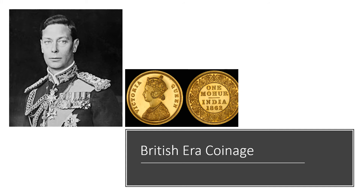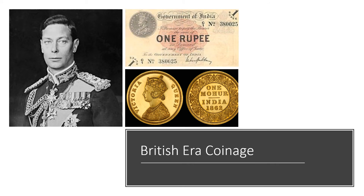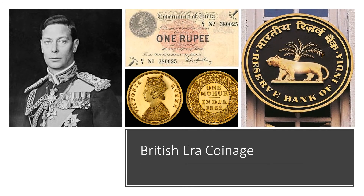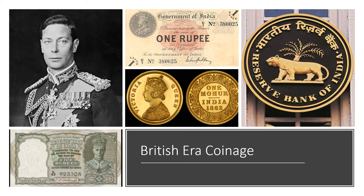During World War I, one-rupee coins made of silver were in circulation, but due to the crisis following the war, one-rupee coins could not be generated, and therefore for the very first time, one-rupee notes were introduced. Finally, after the establishment of the Reserve Bank of India in 1935, the government of India was empowered with the issuance of Indian currency notes. The very first paper currency the RBI issued in 1938 was a five-rupee note with a portrait of King George VI; later, Rupees 10,000, Rupees 2, and Rupees 1 were added to the existing denominations.